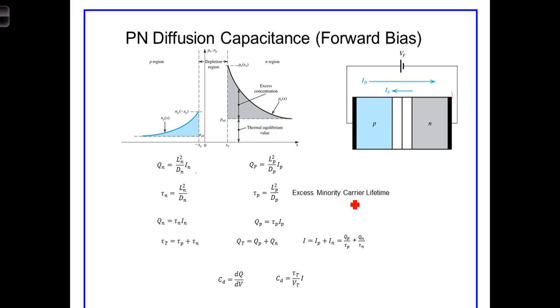It's related to the average length of time a minority carrier exists before recombining. Now, the gory details of the math aren't particularly important at this point, and there are some approximations that aren't important at this level either. But we can then calculate the approximate capacitance due to this separation of charge from diffusion with this formula right here.